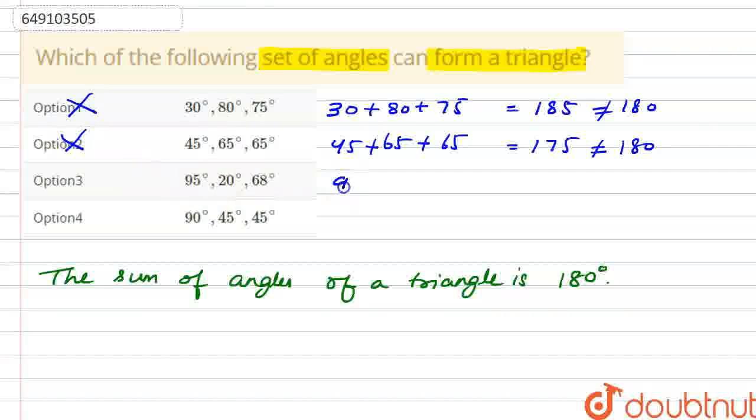Similarly, if we check option third, which is 95 plus 20 plus 68. Here 95 plus 20 is 115, and 115 plus 68 is 183, which is also not equal to 180.